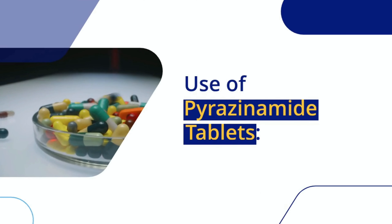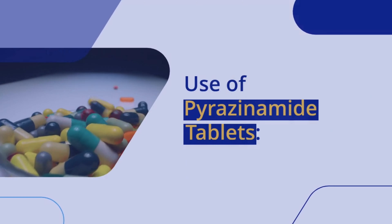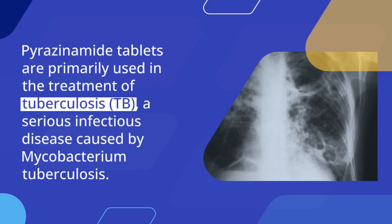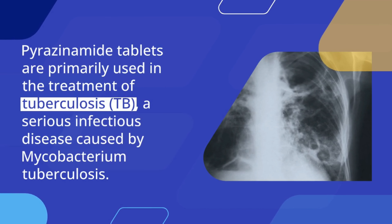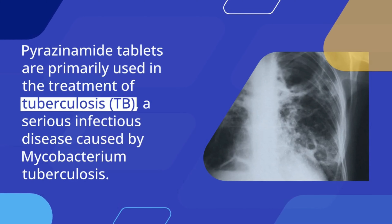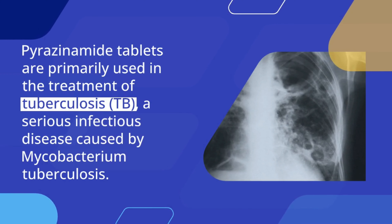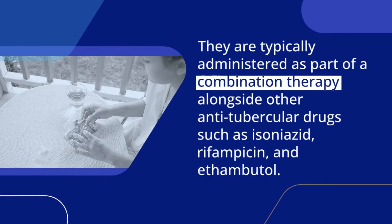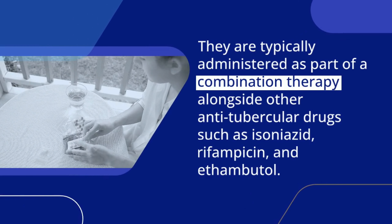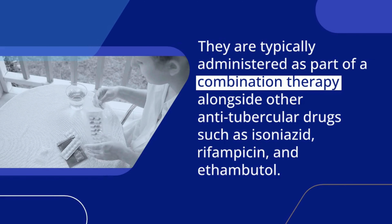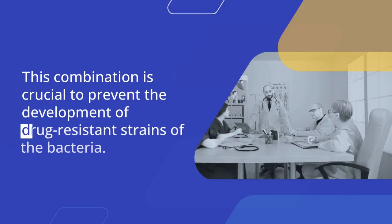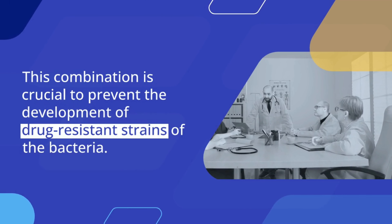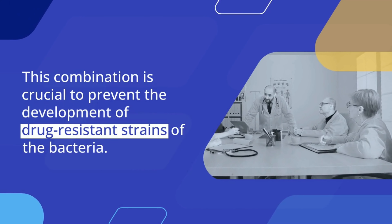Use of pyrazinamide tablets. Pyrazinamide tablets are primarily used in the treatment of tuberculosis, a serious infectious disease caused by Mycobacterium tuberculosis. They are typically administered as part of a combination therapy alongside other anti-tubercular drugs, such as isoniazid, rifampicin, and ethambutol. This combination is crucial to prevent the development of drug-resistant strains of the bacteria.